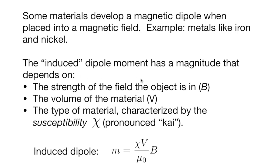The induced dipole moment that we see actually has a magnitude that depends on a few properties of the system. We can look at it in terms of the strength of the field where you have the object. We'll just call that B. The volume of the material, big V. And then we have the property of the material called the susceptibility. And we use the Greek character χ to represent that. So the induced dipole has a comparatively simple form of χV over μ₀ times the field that the dipole is in.